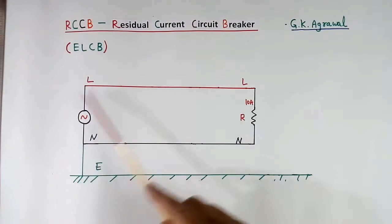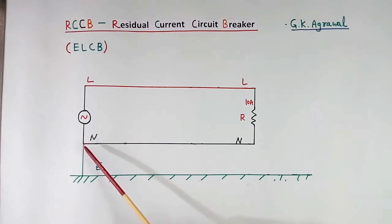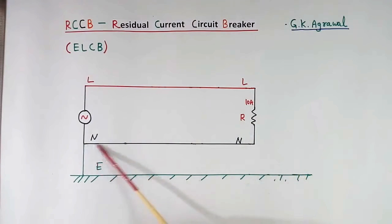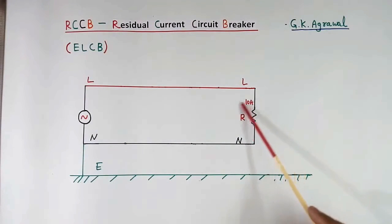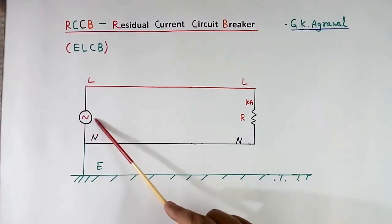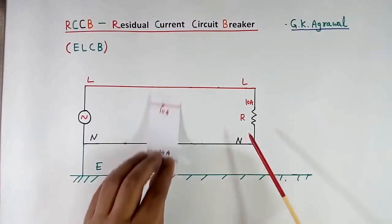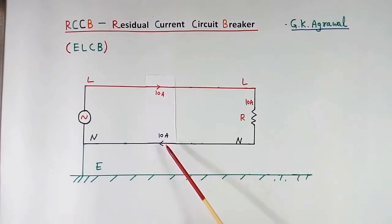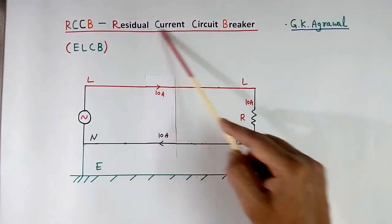Here I have shown one simple system. This is the secondary of the transformer which is located in the substation. From there, 2 wires will come to our house — one is called the line wire, one is called the neutral wire. This wire length may be a few kilometers. Now suppose we have connected a 10 ampere load. Because this is AC, current can flow in either direction, changing with time. When current is flowing, this wire also carries 10 ampere and this wire also carries 10 ampere instantaneously.